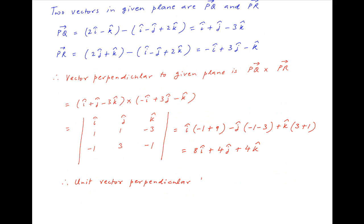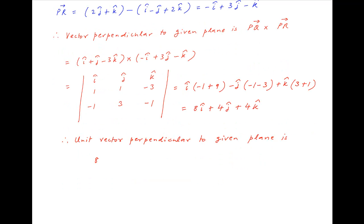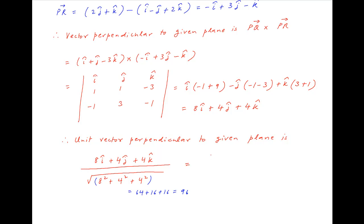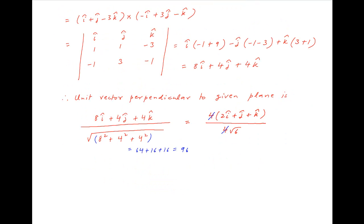Therefore, a unit vector perpendicular to the given plane is 8i plus 4j plus 4k divided by its magnitude, which equals the square root of 8² plus 4² plus 4². This equals 4(2i plus j plus k) in the numerator divided by 4 root 6 in the denominator. The 4 cancels, and therefore the desired unit vector is (2i plus j plus k) divided by root 6, which is the required answer.